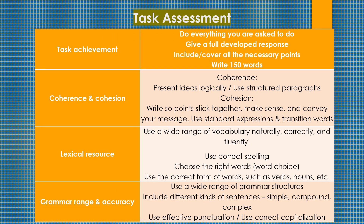Now let's take a look at the task assessment. 25% is for task achievement, in which you need to answer everything you're asked to do in the question. The other 25% is coherence and cohesion — you need to use structured paragraphs and make standard expressions. The other 25% is lexical resource — you need to use a wide range of vocabulary. And the last 25% is grammar range and accuracy, which includes different kinds of sentences ranging from simple, compound, and complex.